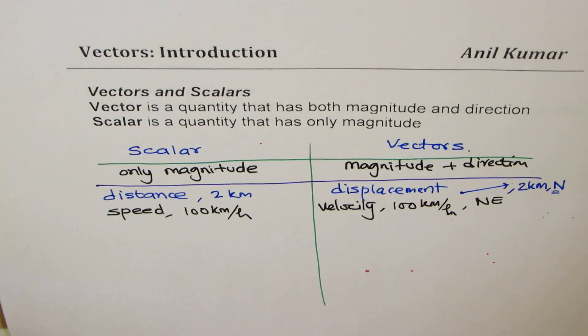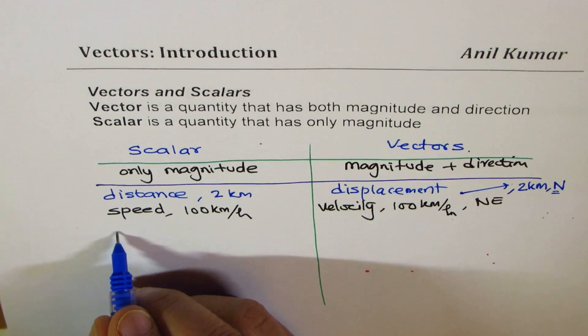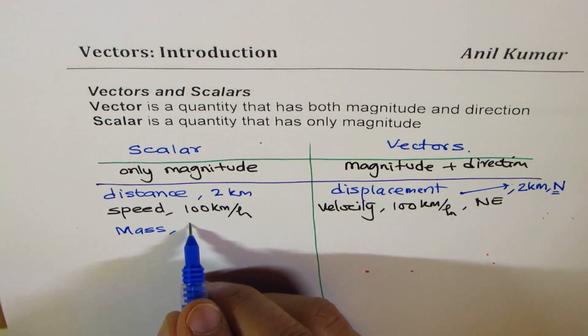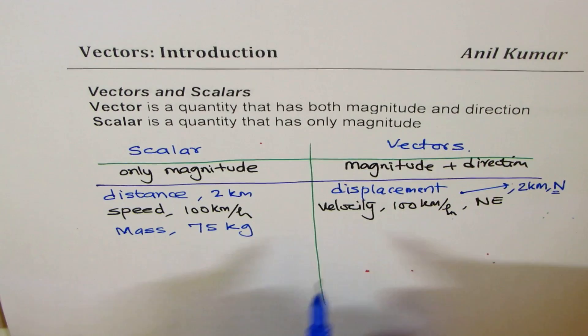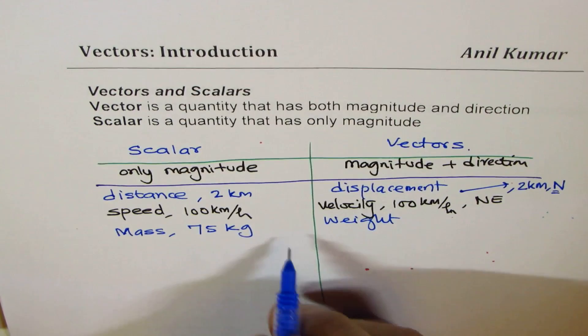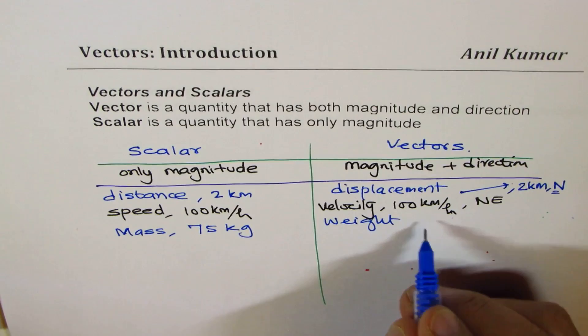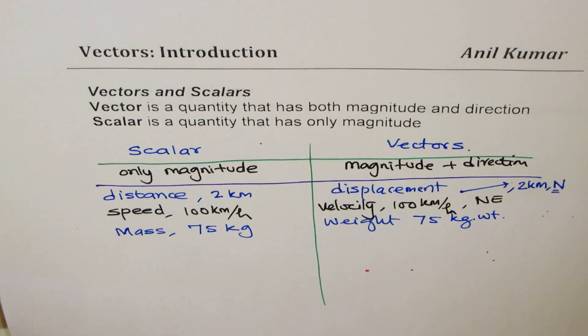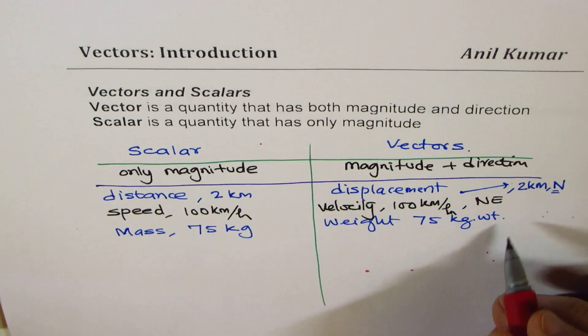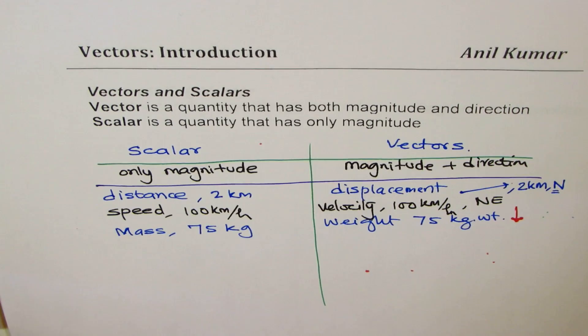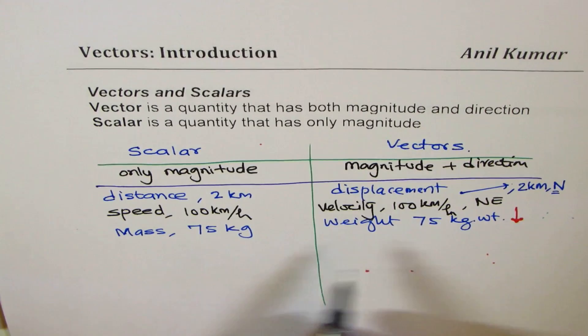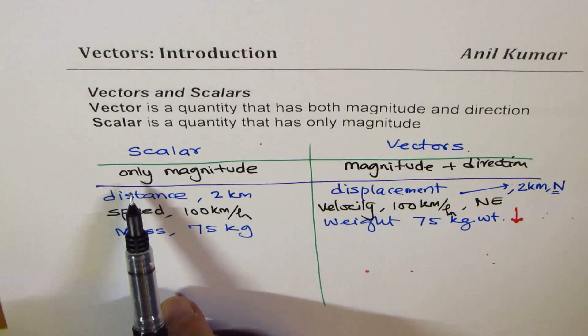To add to this list, we could have mass. Mass is the matter contained in a body — if my mass is 75 kg, that's the matter in a body. On the other side, we have weight. Weight is a force by which a body is attracted towards the center of the Earth. Weight changes with position — it always acts downwards towards gravity. On the moon, for example, your weight will be about one sixth of what it is here. So scalars have only magnitude, and vectors have magnitude and direction.